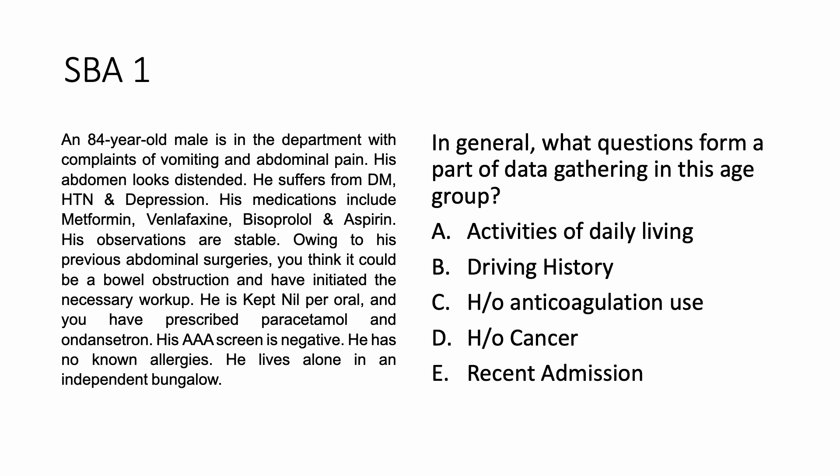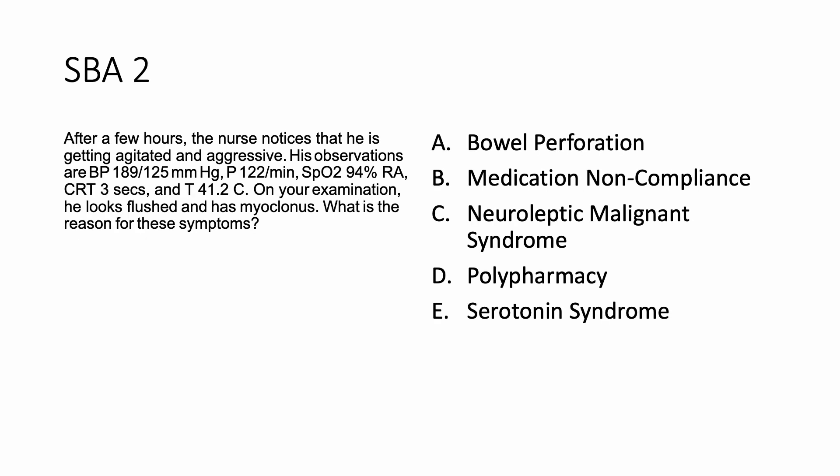Now for part two of the question. The same patient, after a few hours — the nurse notices that he is agitated and aggressive. His observations show blood pressure off the roof, tachycardia, saturating okay, capillary refill of 3 seconds, and a temperature of 41.2. On examination, he looks flushed and has myoclonus. What is the reason for these symptoms? Options: bowel perforation, medication non-compliance, neuroleptic malignant syndrome, polypharmacy, or serotonin syndrome. You can pause here and select your choice.